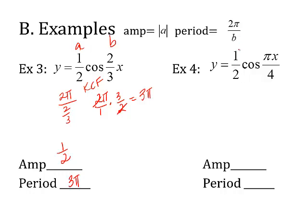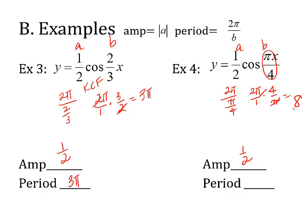Example 4. The absolute value of A is one-half. And this time, B is π over 4. So 2π divided by π over 4: keep 2π over 1, change to multiplication, flip it. The π's cancel and I'm left with an 8. So my new period is 8.